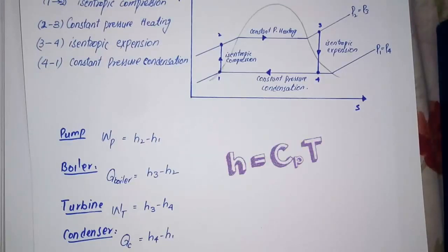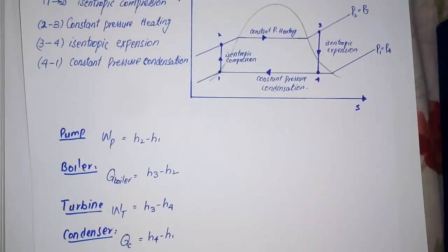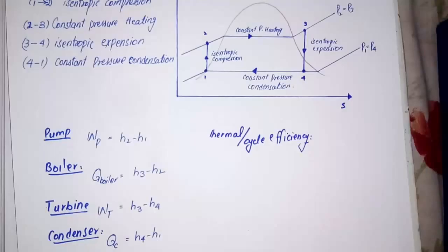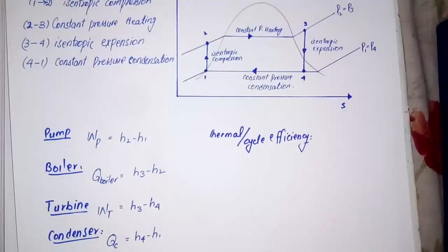It is very important to note that h = c_p × T is only valid in the case of an ideal gas for air, so h can be written as c_p × T in the case of a gas turbine but not in the case of a steam turbine. Thermal efficiency equals net work output divided by heat supplied.